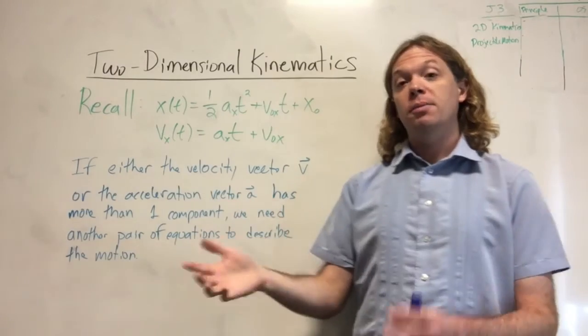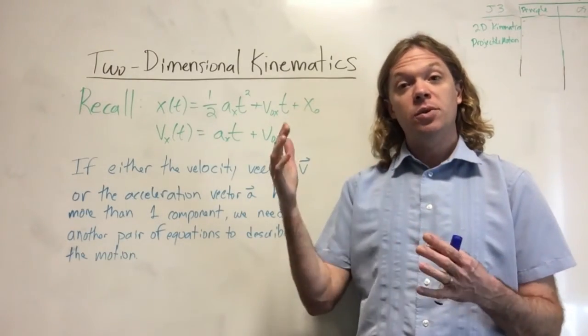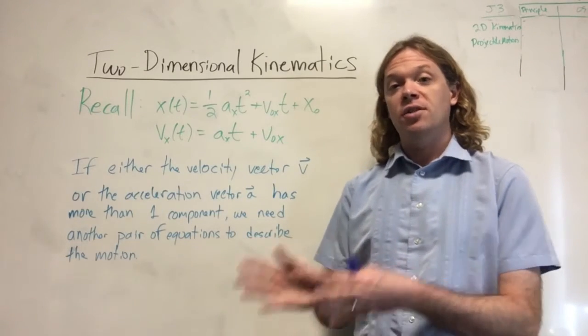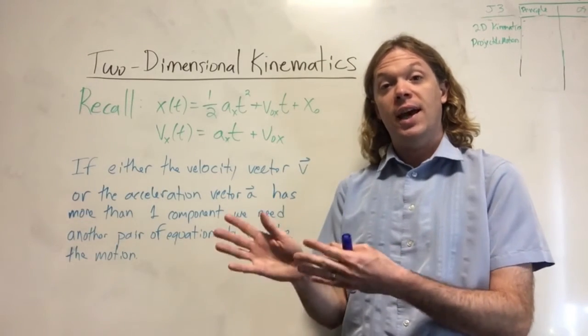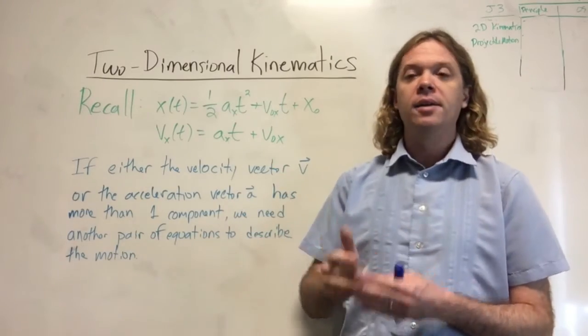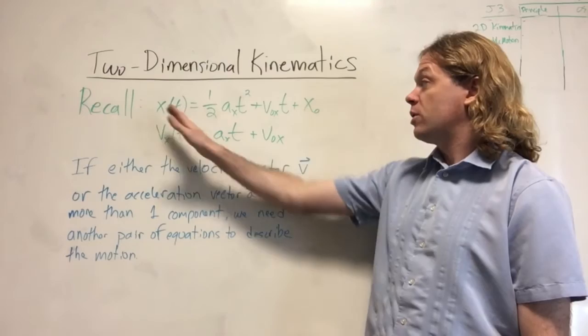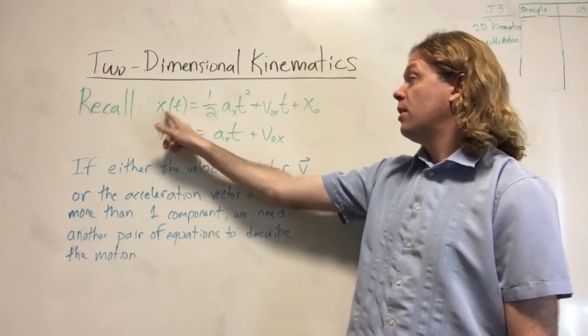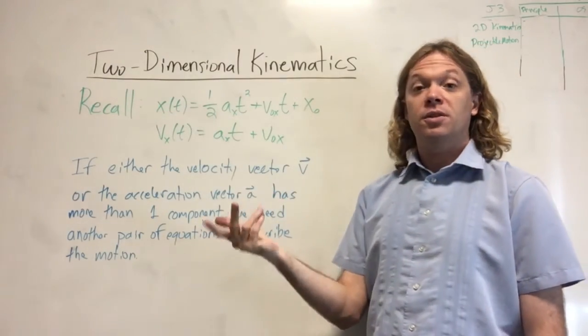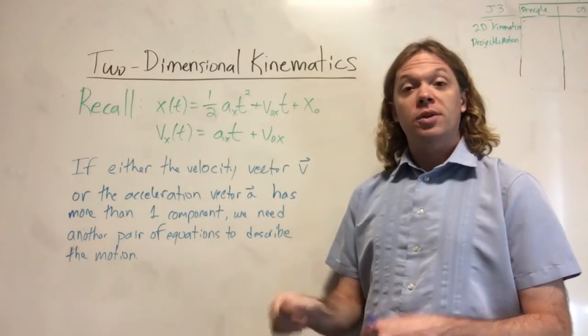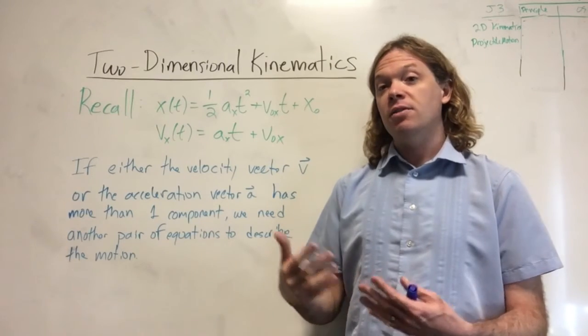So luckily, going from one dimension to two-dimensional motion conceptually is actually very simple. If you have an acceleration or a velocity that is not just in one dimension, say it's not just in x, but it's in x and y, then you just have another set of two kinematic equations, which looks exactly like these except with all these x's replaced with whatever the other direction is, say y. And the idea is that they work completely independently.